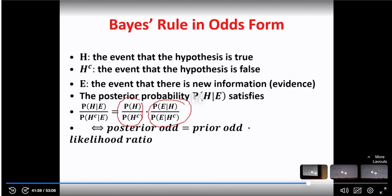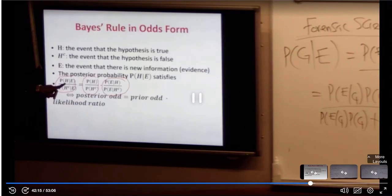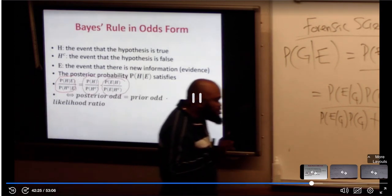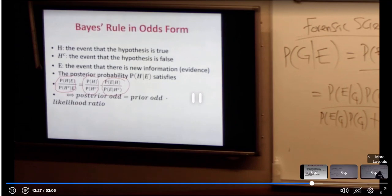Combining these gives us the odds of the posterior. The odds of the posterior is the probability that the hypothesis is true given the evidence, divided by the probability that the hypothesis is not true given the evidence.